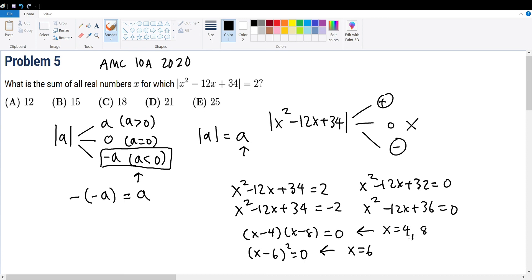And we're trying to find the sum of all these solutions. So 4 plus 8 plus 6 gives 12 plus 6 gives 18. Meaning the solution to this question will be answer choice C with 18.